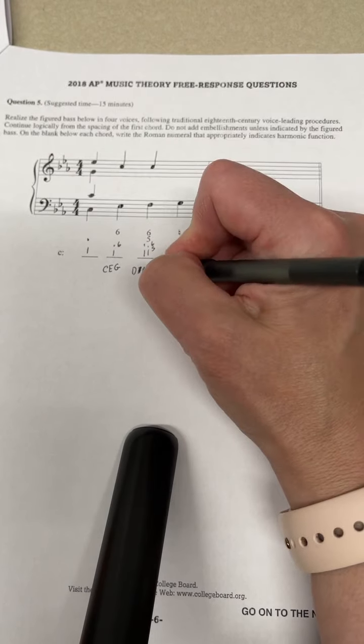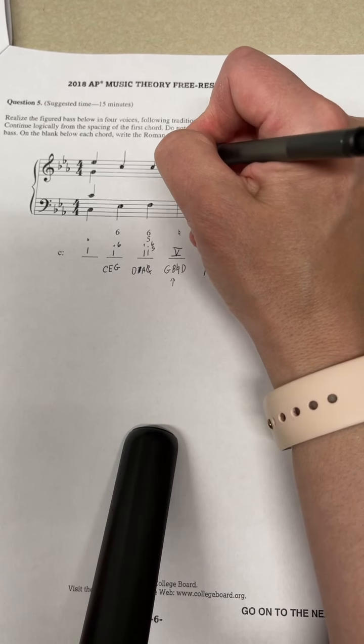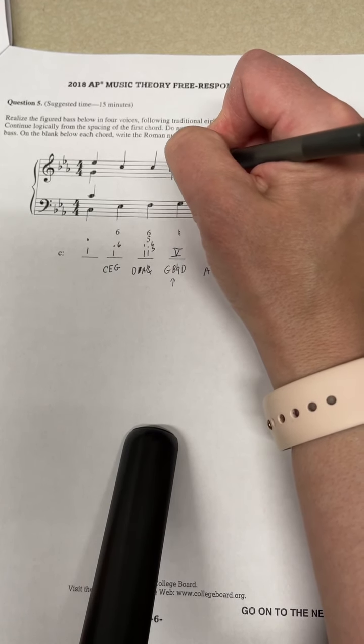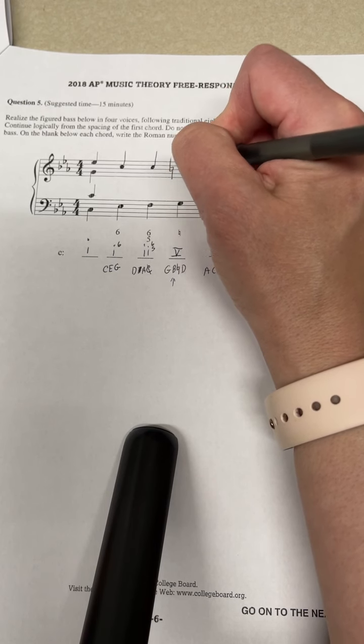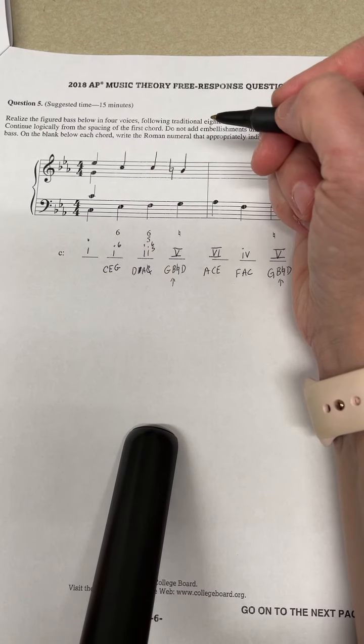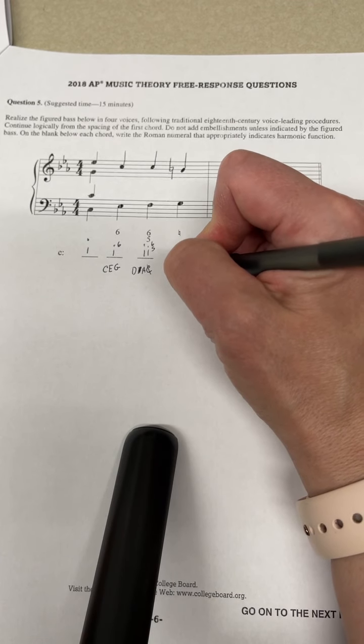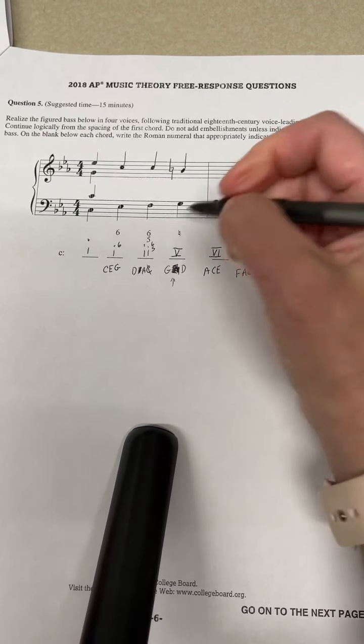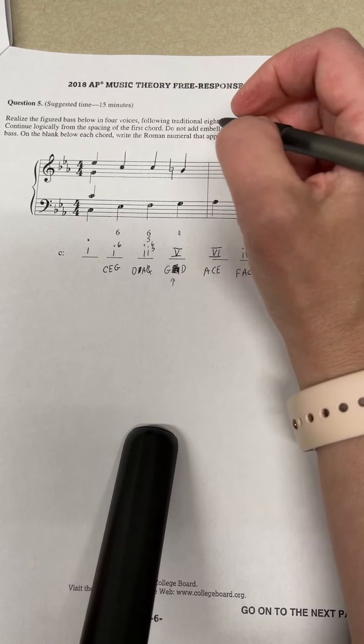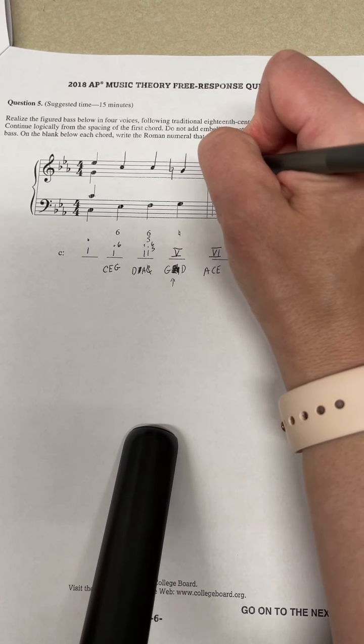And resolve it down to the B natural. And remember when you're in minor you always want the leading tone to come from scale degree one or tonic, so I'm going to scratch that out because we cannot double the leading tone. Okay, and then because my leading tone is in an outer voice I have to resolve it to the C.